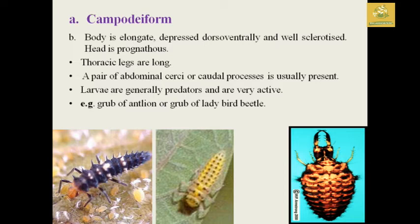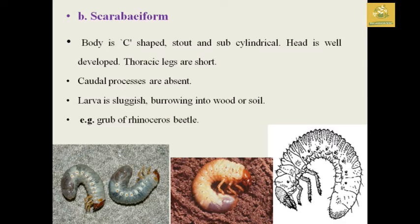In campodeiform larvae, they have an elongated, depressed body with well-sclerotized cuticle, the head is prognathous, and the thoracic plates are long. A pair of abdominal cerci and a caudal process are usually present. The larvae are generally predators and very active. Examples are the grubs of antlion and ladybird beetle.